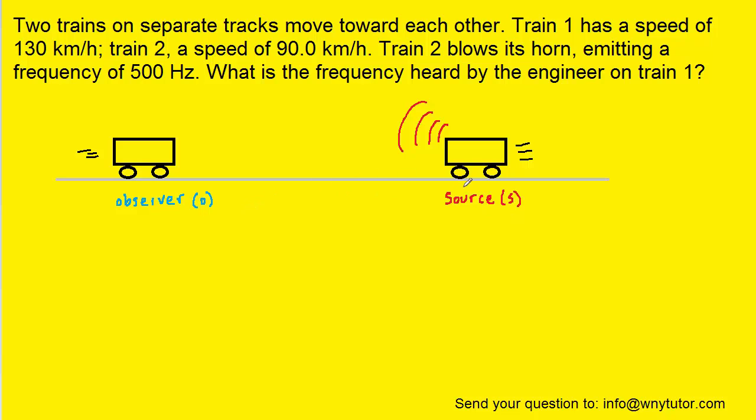We have two trains that are approaching each other, moving towards each other, and one of them emits a sound. Because this train is emitting the sound, we have labeled it as the source and we will use a lowercase s to denote that source.